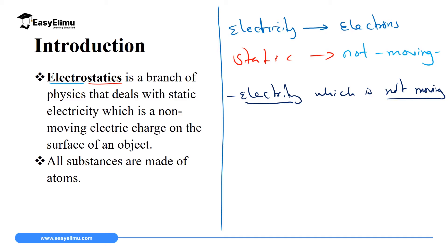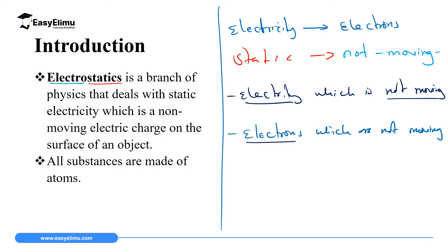Also, if we replace the word electricity with electrons — and that's what I want you to be keen on — then electrostatics can be written as the study of electrons which are not moving. This is the most elaborate interpretation of the title electrostatics. In this topic, we will be discussing electrons which make up electricity and which are not moving, because if we start discussing electrons which are moving, then we move to what we call current, which is our next topic.